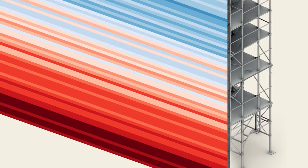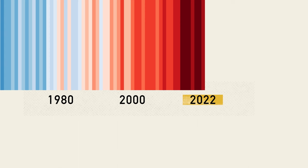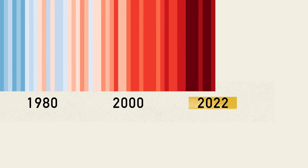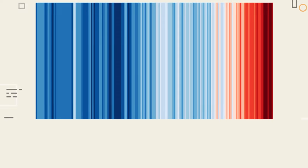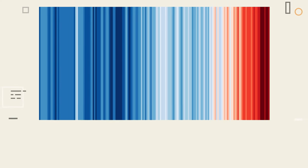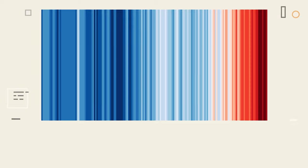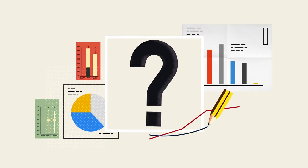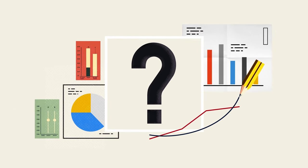Updated every year, Hawkins says 2022 was the first year that every country needed a new red stripe, demonstrating how fast the Earth's climate is changing. Although the graphic breaks some of the rules of data visualisation — it doesn't provide a title or legend — arguably it is one of the most iconic graphics of modern times. What do you think the next chart to change the world will be?